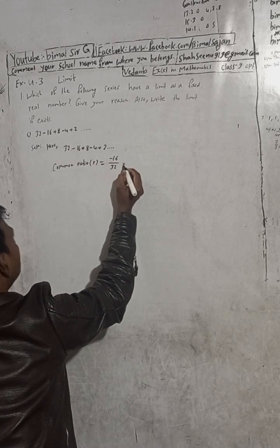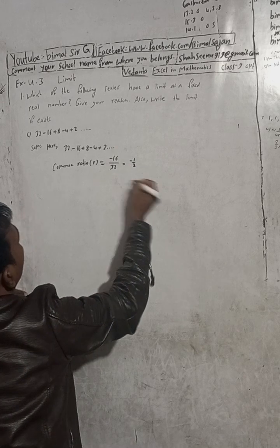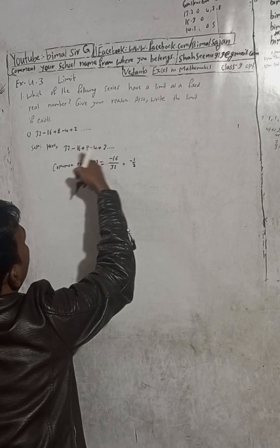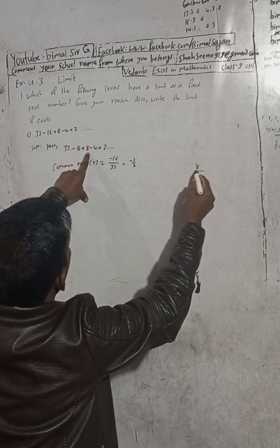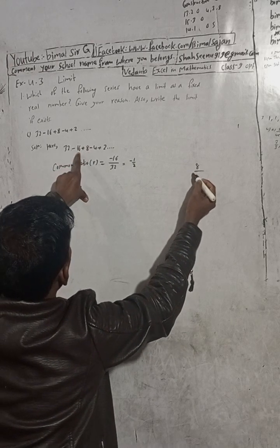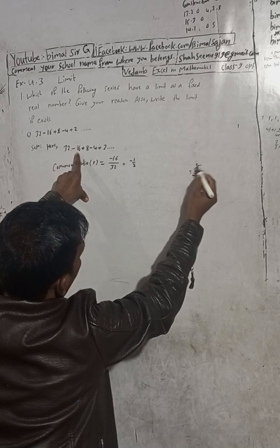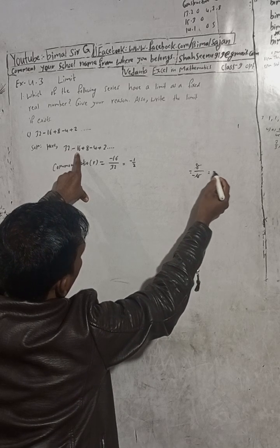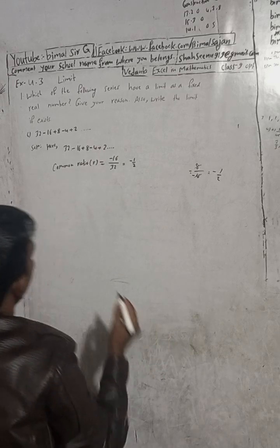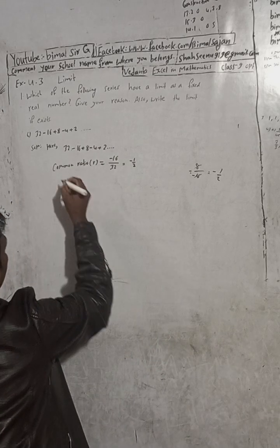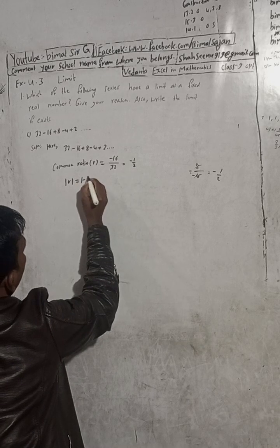The common ratio comes from dividing the second term by the first: 8 divided by minus 16, which gives minus 1 by 2. So the common ratio R is minus 1 by 2.